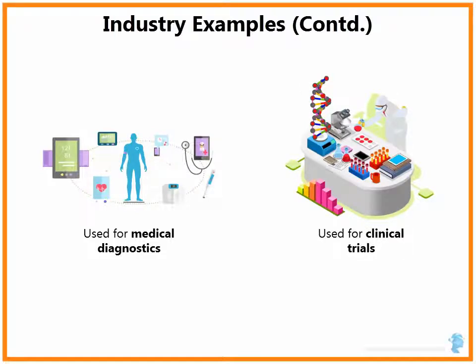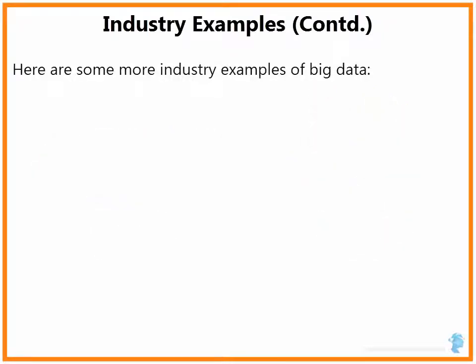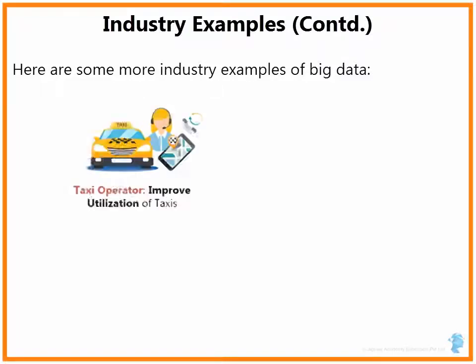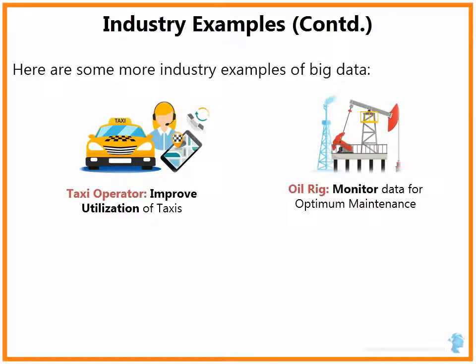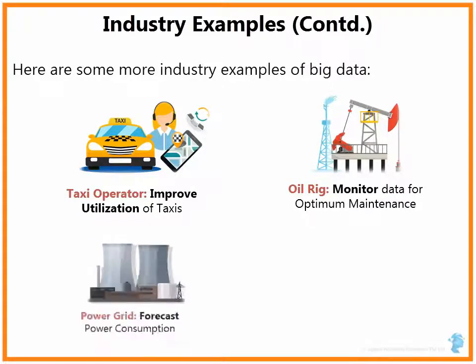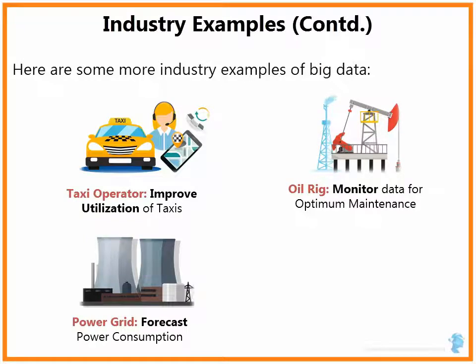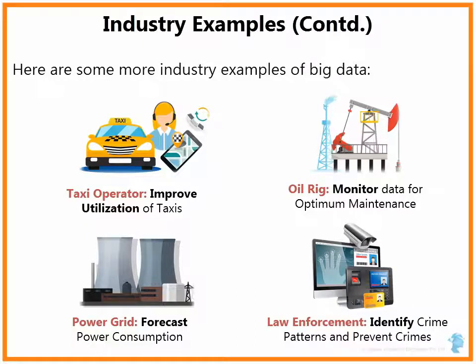Let us look at some more industry examples of Big Data. Almost every industry has some use of Big Data. A taxi operator can use Big Data analytics to improve the utilization of taxis. An oil rig can use this analytics to monitor the sensor data for optimum maintenance. A power grid can use it to forecast next day's power consumption. The law enforcement department can use Big Data analytics to identify crime patterns and prevent crimes.